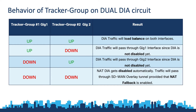In the previous sections we discussed boolean OR and AND operations with a single DIA circuit mapped to a tracker group. Now, in a scenario where there are two DIA circuits and both have either a single tracker or dual endpoint tracker group configured along with NAT fallback, this table explains the behavior expected under different scenarios. When both tracker groups are up, DIA traffic will get load balanced between Gig1 and Gig2. When tracker group 1 is up but tracker group 2 is down, DIA traffic passes through Gig1. When tracker group 1 is down but tracker group 2 is up, DIA traffic passes through Gig2. Finally, if tracker groups on both interfaces go down and NAT fallback is configured, traffic will get routed through the SD-WAN overlay tunnel through the site advertising a default route.